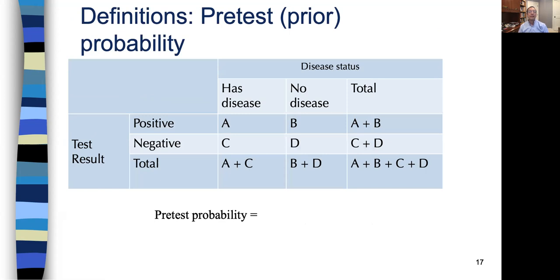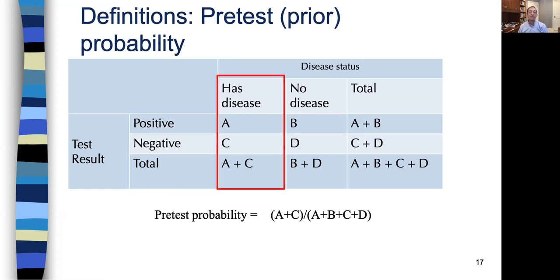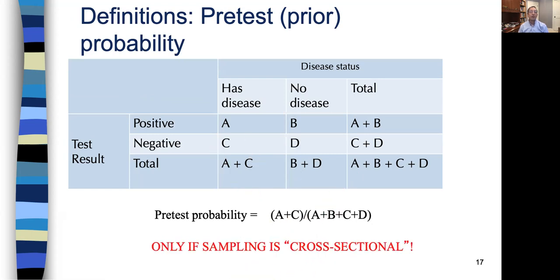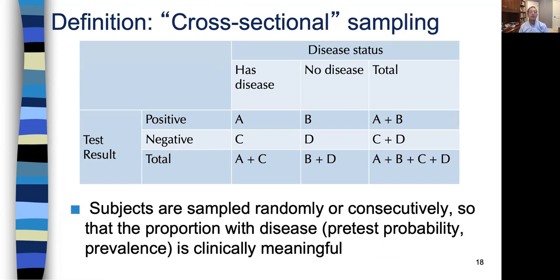Continuing with definitions: the pretest probability or prior probability is what percent have the disease in a population — that would be A plus C over A plus B plus C plus D. But you can only do that if the sampling is what we call cross-sectional. So we need to briefly note: when will A plus C over the total be the pretest probability? The answer is if subjects are either randomly sampled from a population or consecutively, so that the proportion with the disease — the pretest probability or prevalence — is clinically meaningful.